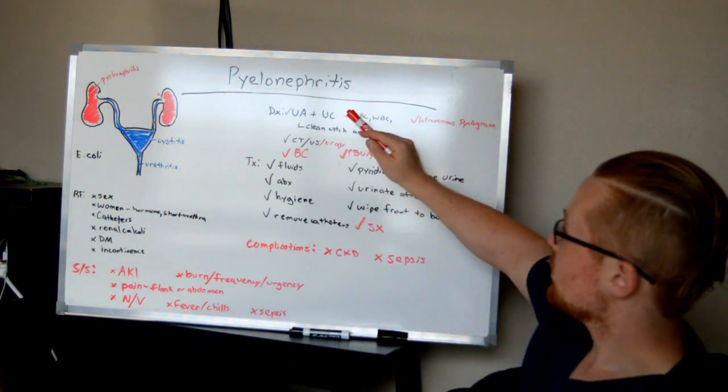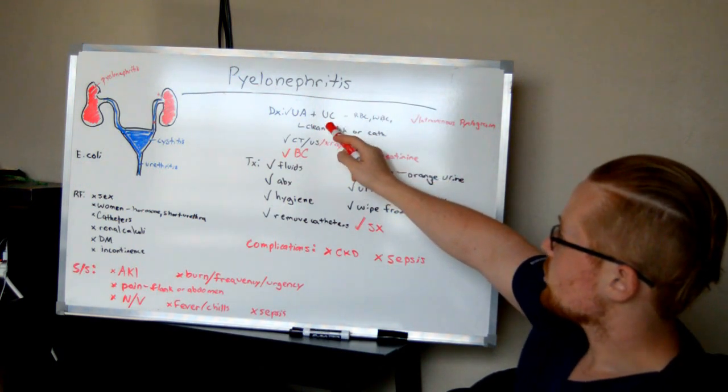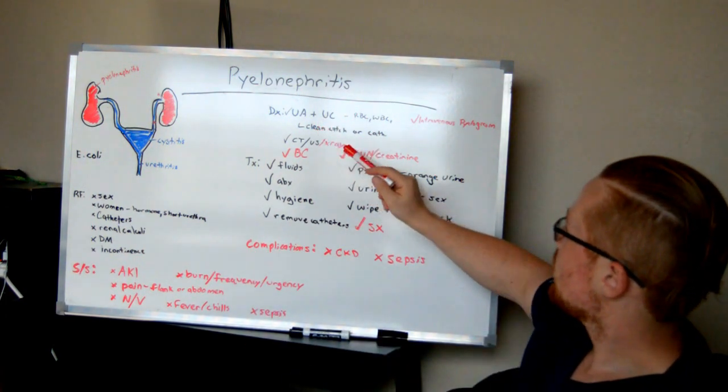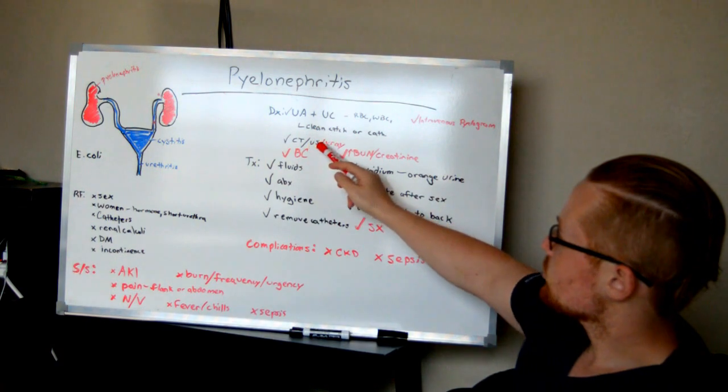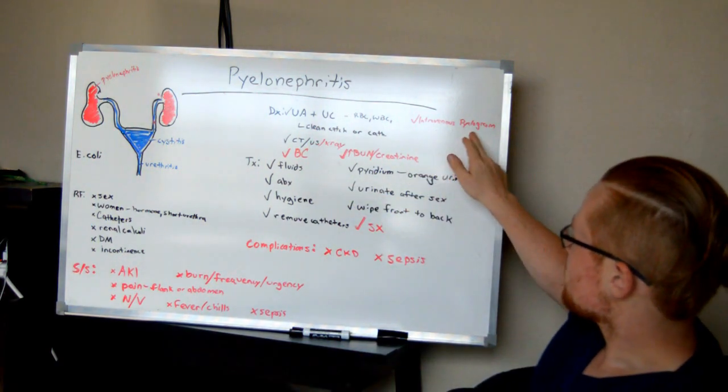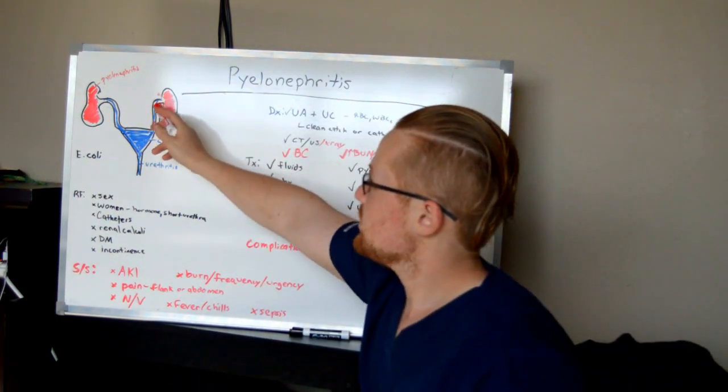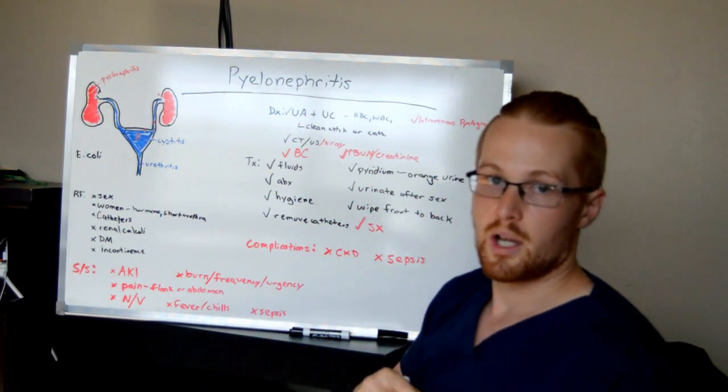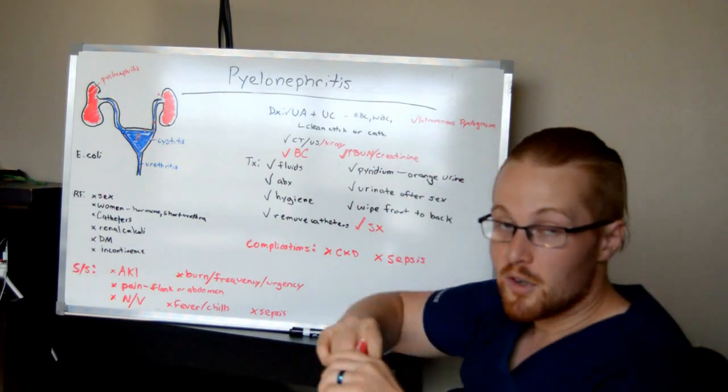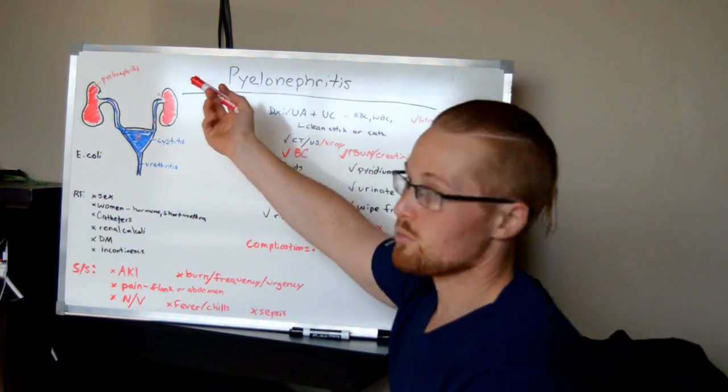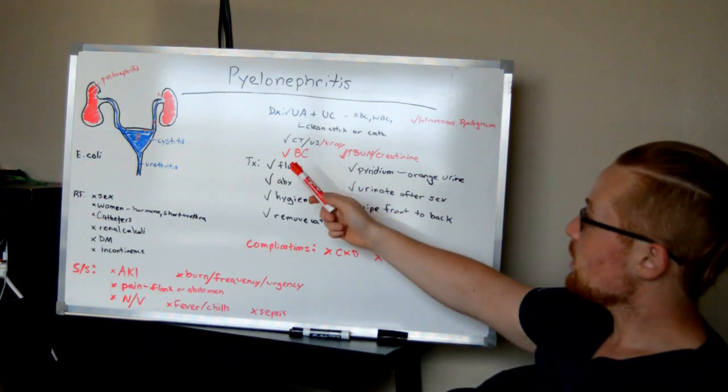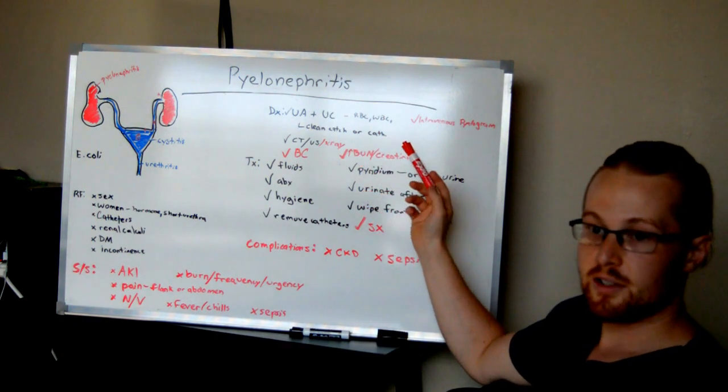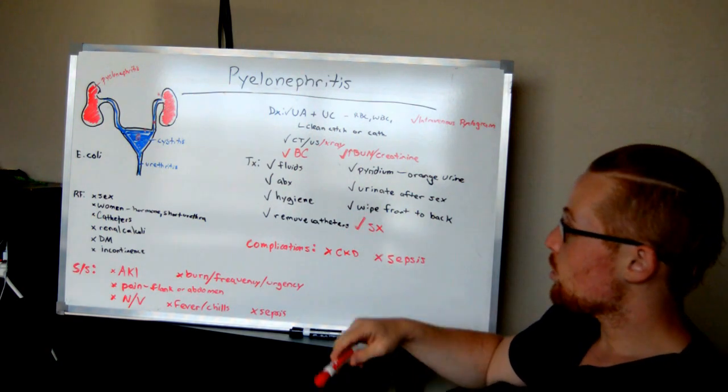For diagnosis, you're going to do a urinalysis and urine culture to see if you have an infection. They may also do CT scans, ultrasounds, x-rays, or an IVP (intravenous pyelogram) around the kidney to see if there's a stone, defect, or fistula causing the infection. Blood cultures are important because very often they're septic. You may also have elevated BUN and creatinine, which is a sign of acute kidney injury—at that point you know it's more than just a urinary tract infection; something's affecting the kidneys.